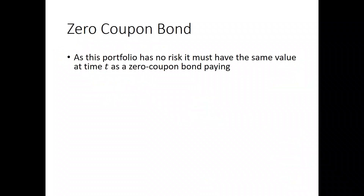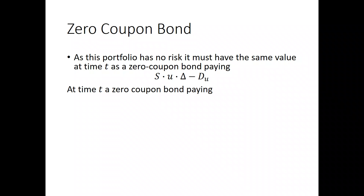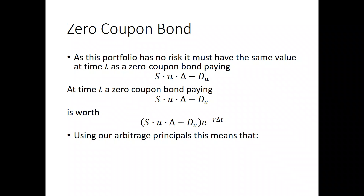This portfolio has no risk, and so it must have the same value at time t as a zero coupon bond paying s times u times delta minus d sub u. We know the value of the zero coupon bond as s times u times delta minus d sub u times e to the minus r delta t. Using our arbitrage principles, we know that s times delta minus d equals s times u times delta minus d sub u times e to the minus r delta t. We've got two portfolios — the zero coupon bond and the portfolio that is short one option and long delta shares — that have the same value at time t plus delta t, so they must have the same value today.